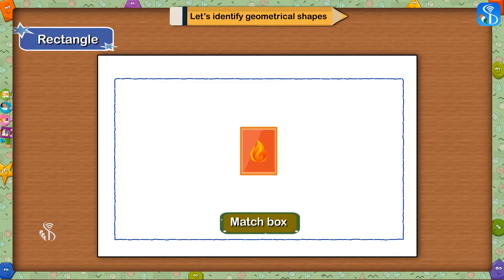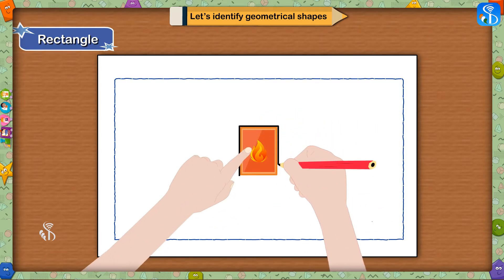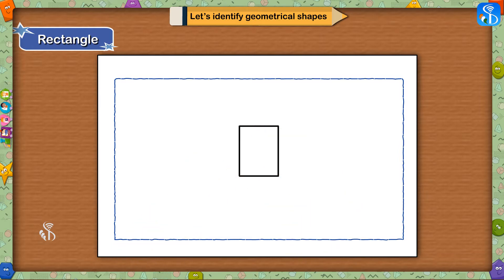Children, this is a matchbox which all of you are aware of. We will trace the edges of this matchbox with a pencil and draw its shape on the paper. Look here, this shape is known as a rectangle. A rectangle has four sides.